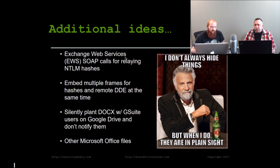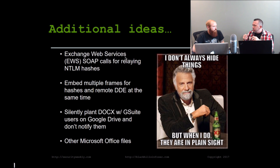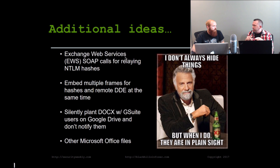A couple of other ideas: I've seen a GitHub repository using NTLMv2 hashes with Responder or Impacket and then using Exchange Web Services with a SOAP call to do relaying — to send email or backdoor a user's account. You could also combine this with DDEs — do multiple frames within the document, one for the DDE, to fetch a remote document that has a DDE in it. That way when endpoint security scans the document, it's not seeing anything local. You could also plant these in G Drive with G Suite, since you can share a file with anybody — plant a .docx called 'Passwords' or 'Salaries' and pull them to it.